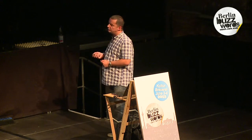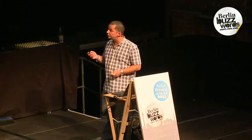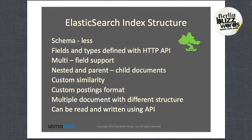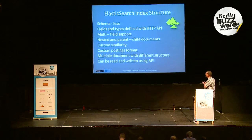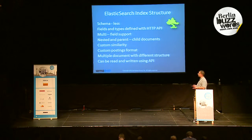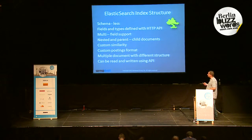The schema can be read using the API — functionality introduced in 4.3. In case of Elasticsearch, we have so-called schema-less. Elasticsearch can guess the field types if you send data to it. Of course, we can define fields and types with an HTTP API. We can have multi-fields, something similar to dynamic fields in Solr. We can have copy fields, nested and parent-child documents. It also leverages custom similarity and custom postings format. Multiple documents can have different structures using types, and the schema can be read and written using the API.